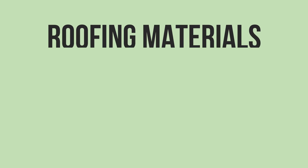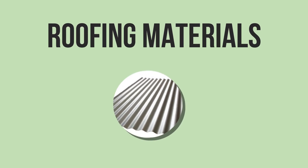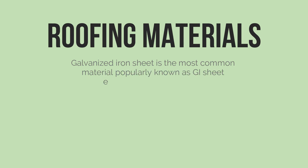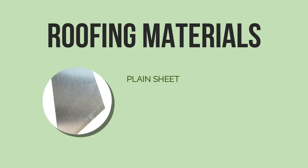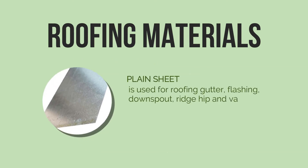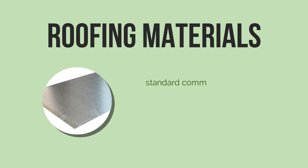Now let's proceed to roofing materials. First is the corrugated metal roofing. Galvanized iron sheet is the most common material, popularly known as GI sheet, either plain or corrugated. Plain sheet is used for roofing gutter, flushing, downspout, ridge hip, and valley roll. Its standard commercial size is 90 by 240 centimeters long.